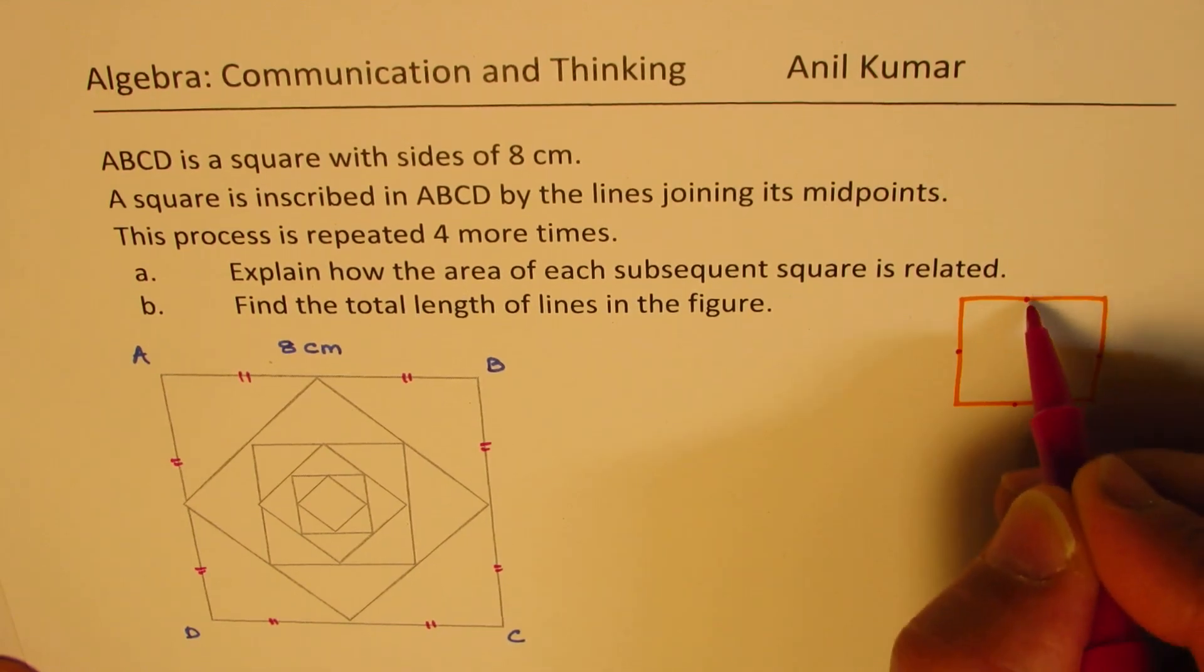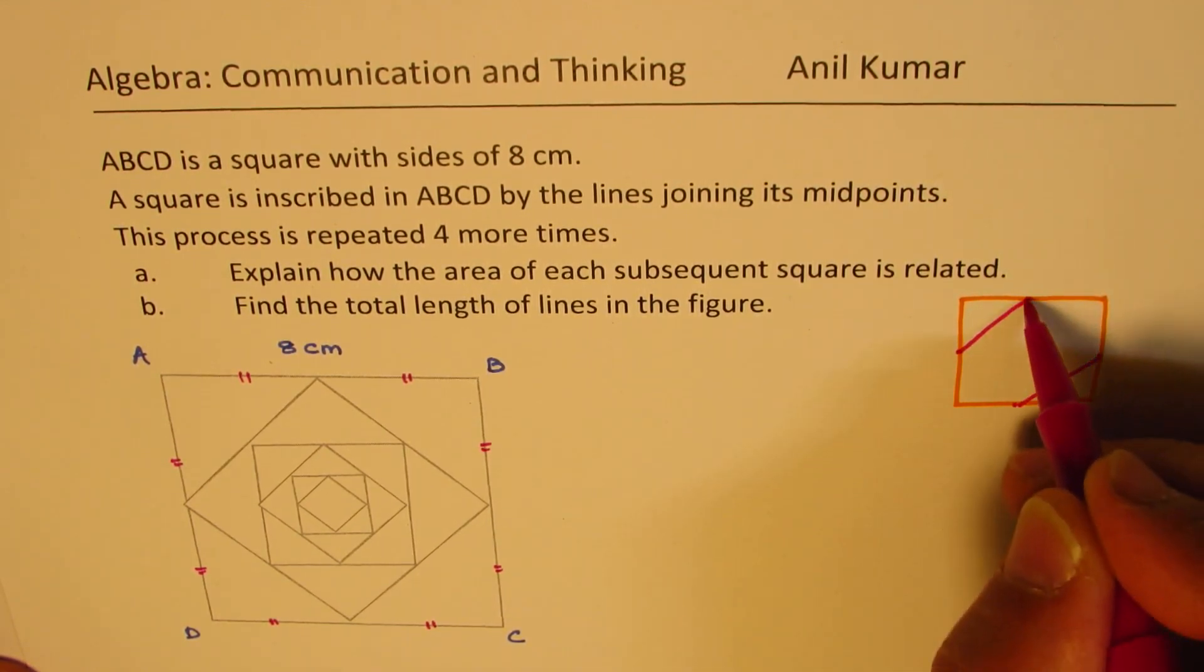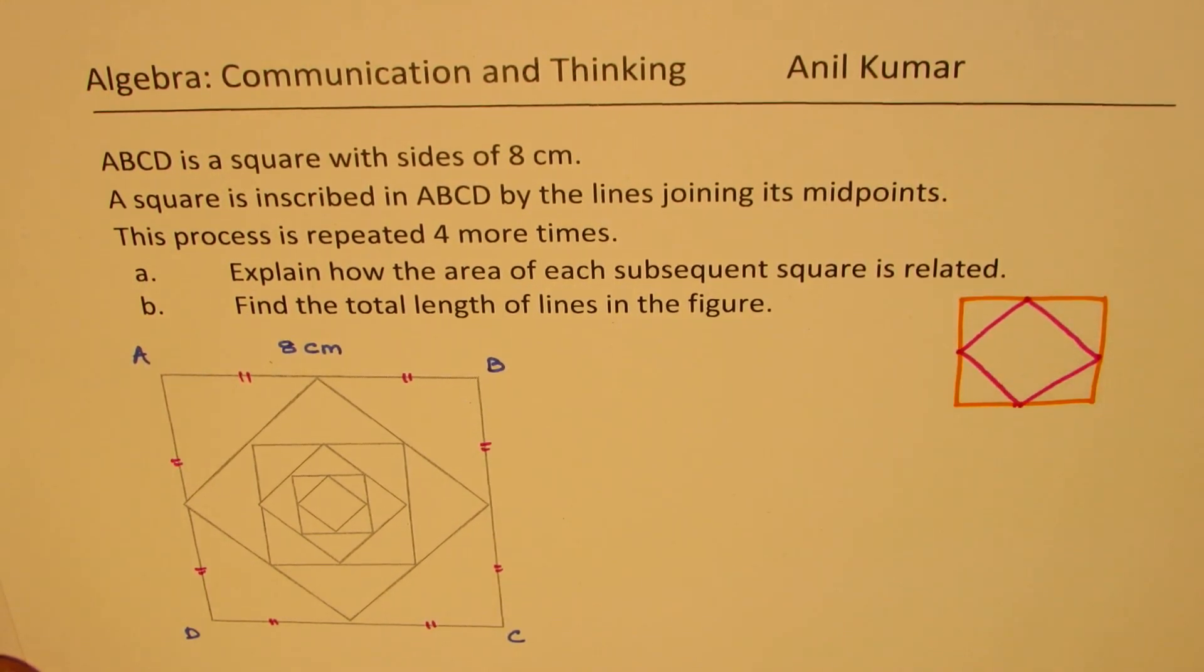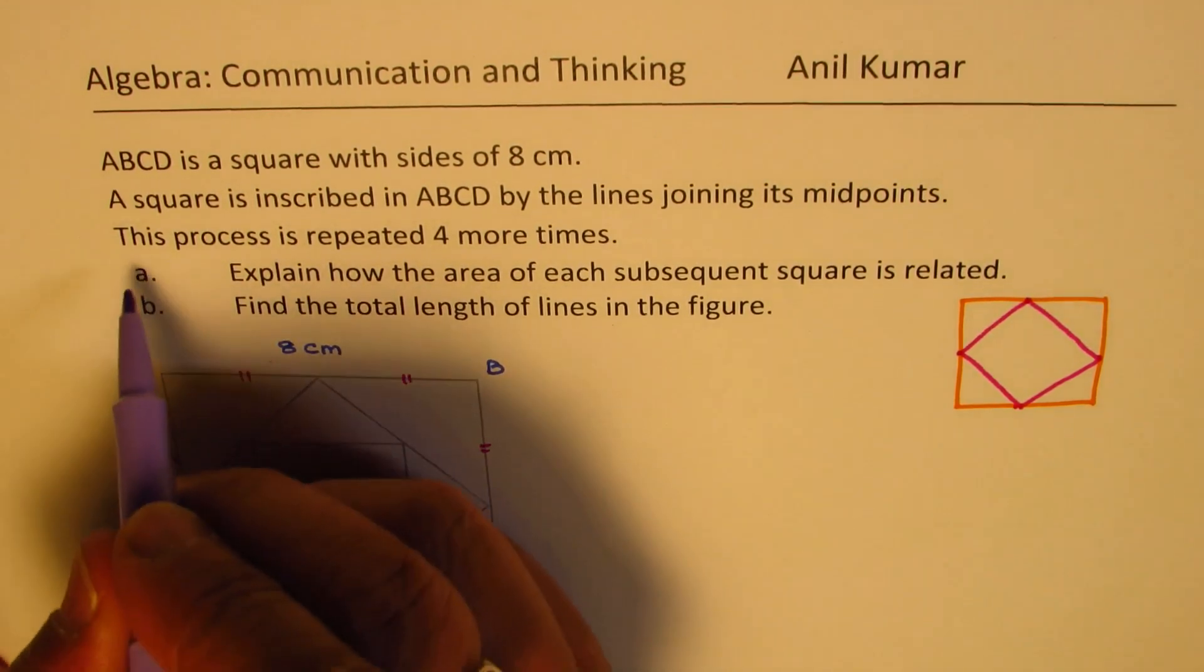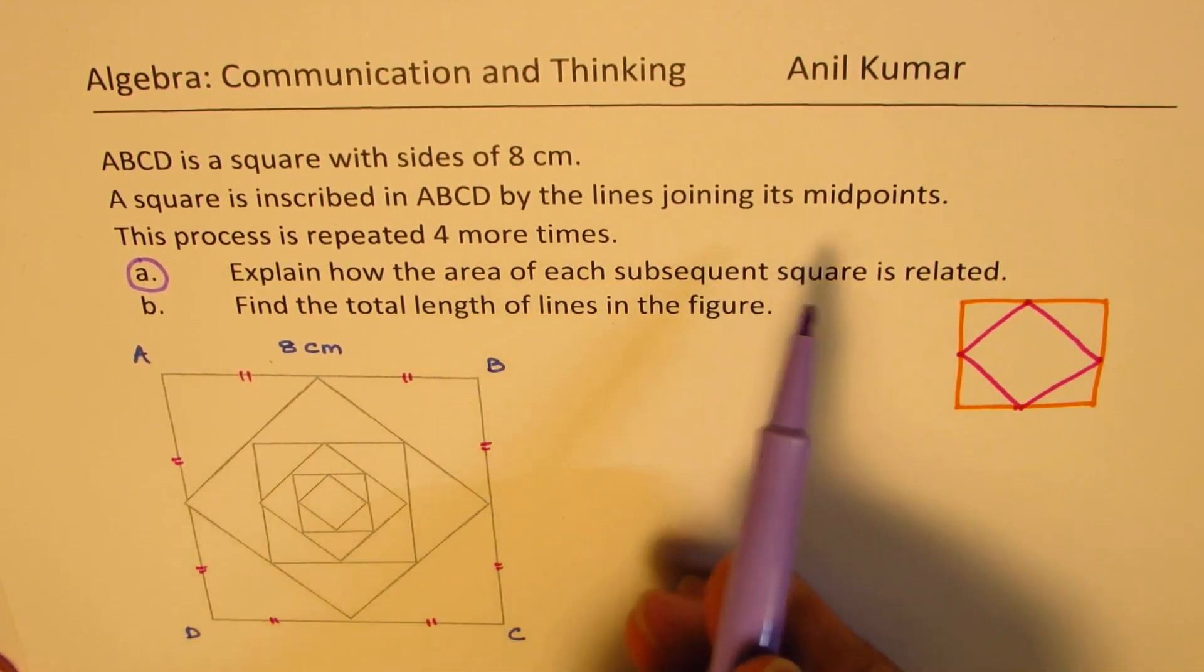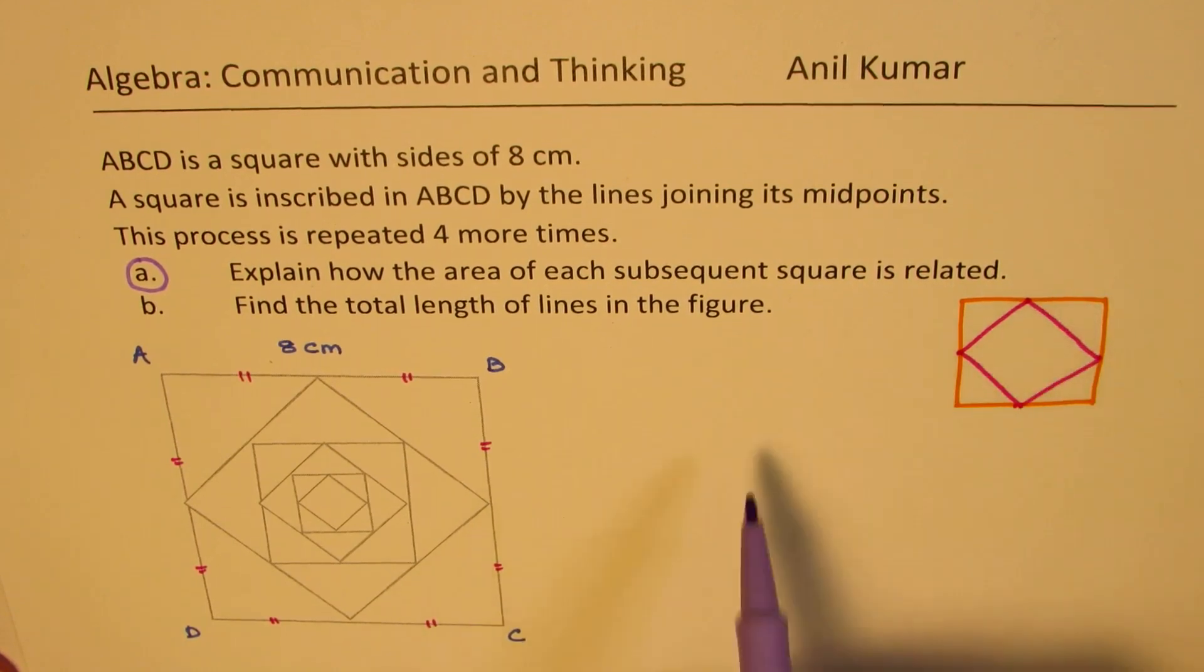Whenever you join these midpoints of a square, you get another square. This drawing is not very accurate, but I hope you will understand the concepts. Now, what is the relation? The question is explain how the area of each subsequent square is related. Let us say this is the square with side H. What is the area of this one?